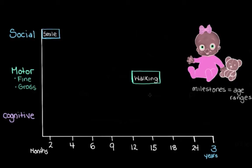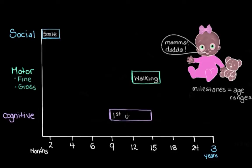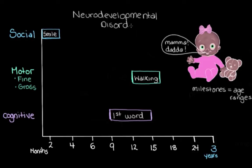For our cognitive category, we have the first word — that's a pretty exciting one. A word like "mama" or "dada" — we'd expect that somewhere between about nine months and 15 months. So these are just a few examples of some of the milestones we know about, giving us a snapshot of what normal development is like. But what happens when someone has a neurodevelopmental disorder? Because these disorders impair some aspect of development, for some kids we might see a delay in reaching some of these important milestones.